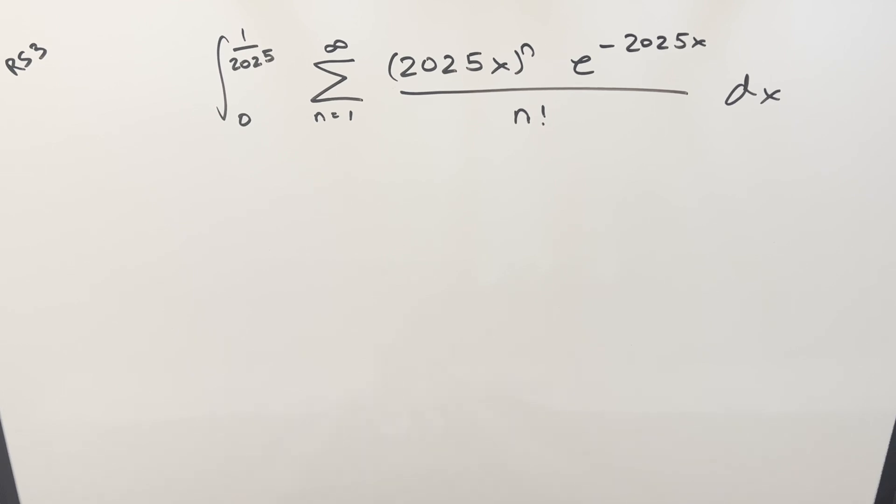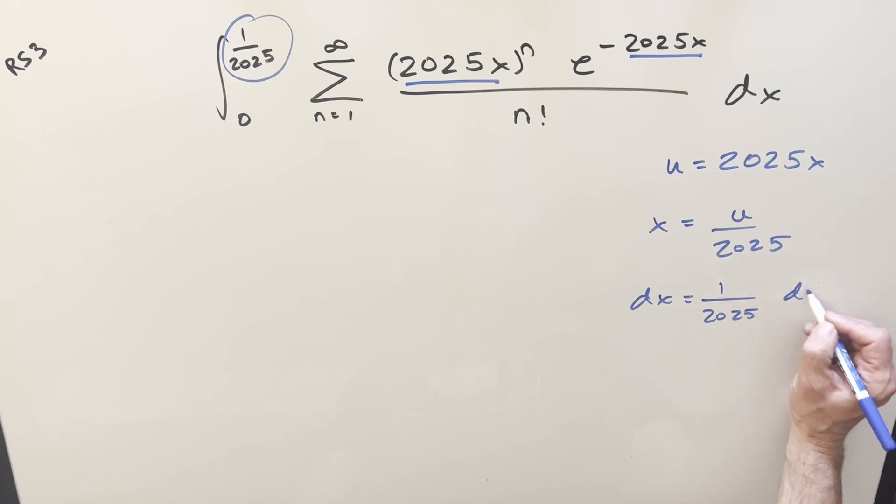The first thing I notice here is that we've got 2025 in multiple places, especially we have exactly this 2025x, 2025x with this here. It makes me think I can simplify it with just a simple u substitution. Let me solve for x. So if we have x is going to be u over 2025, take a derivative to get a dx value. This is going to be one over 2025 du.